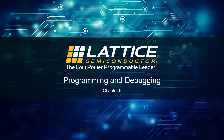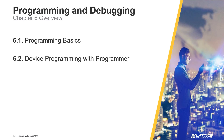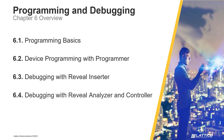Chapter 6: Programming and Debugging. In this section of the Radiant introductory training series, we will discuss the general flow for programming a device and debugging it on physical hardware. Chapter 6 consists of four sections: programming basics, device programming with Programmer, debugging with Reveal Inserter, and debugging with Reveal Analyzer and Controller.